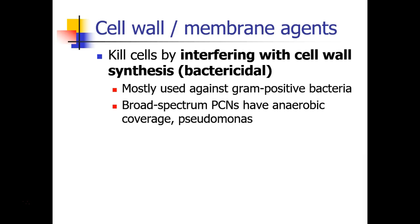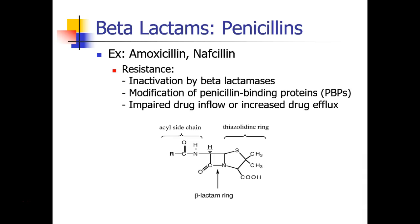The broad-spectrum penicillins have anaerobic coverage as well as coverage against pseudomonas. Penicillins are beta-lactams, and let's look at our diagram which shows the beta-lactam ring — this four-membered ring right over here. The beta-lactams have side chains on different parts of the antibiotic. Beta-lactams include penicillin, amoxicillin, nafcillin, and many others. Bacteria can develop resistance to penicillins through a number of interesting mechanisms — they can create a substance known as beta-lactamases, which cleave the beta-lactam ring and inactivate the antibiotic.